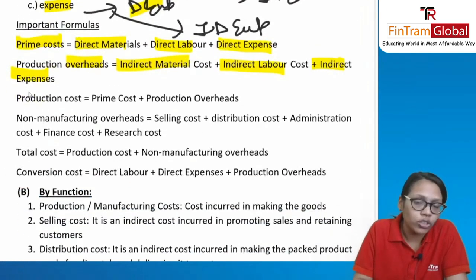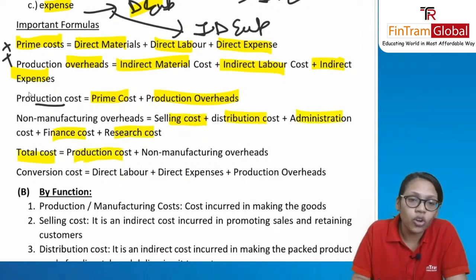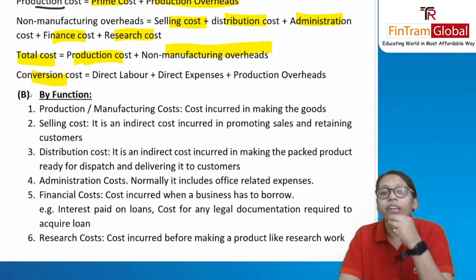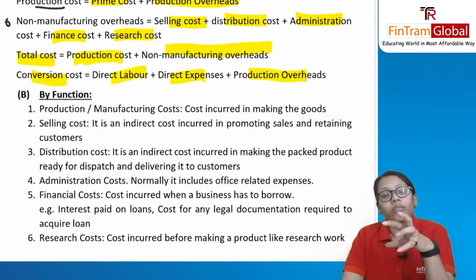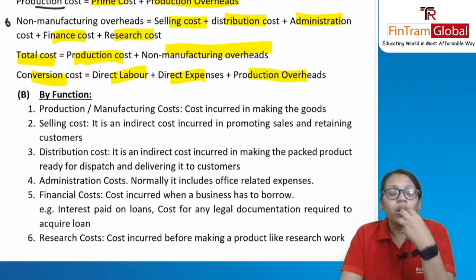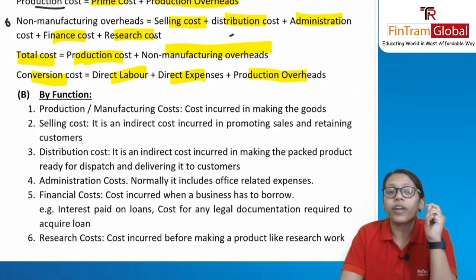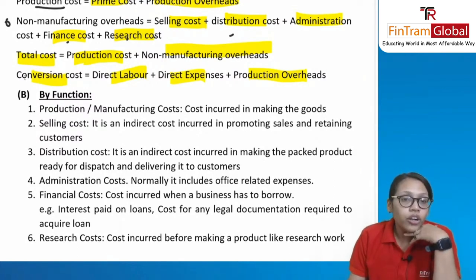The production cost formula is: prime cost plus production overhead. Non-manufacturing overhead includes selling and distribution, administrative, finance, and research costs. Total cost includes production cost plus non-manufacturing overhead. Conversion cost is the cost incurred to convert raw material into finished goods: direct labor plus direct expenses plus only production overhead. Do not include non-production overheads like selling, distribution, administrative, finance, and research costs in conversion cost.